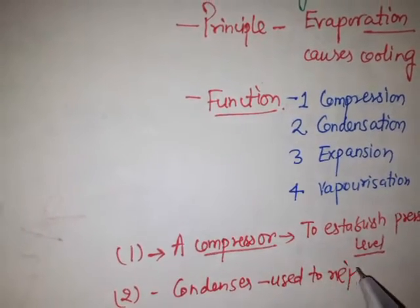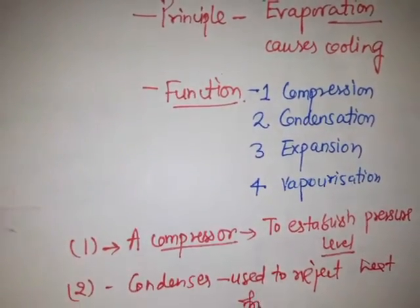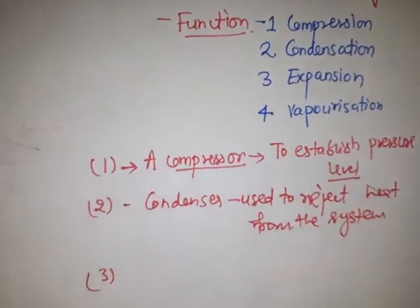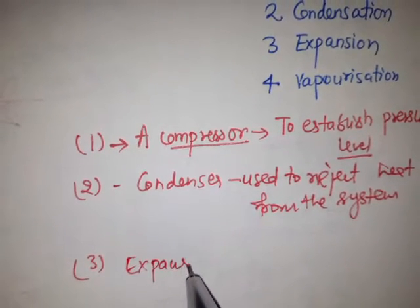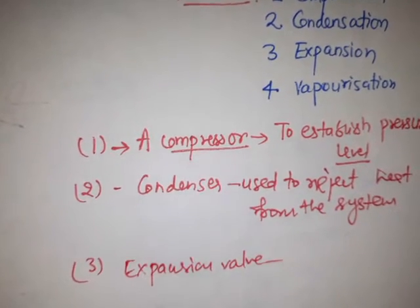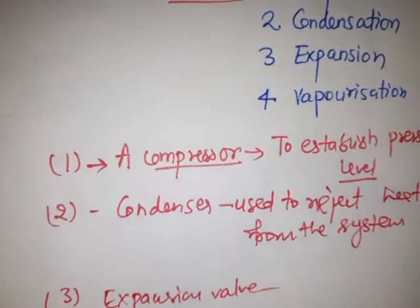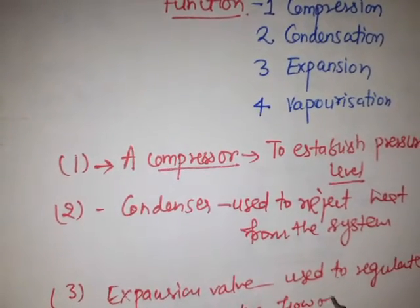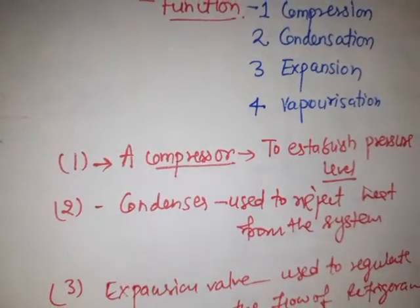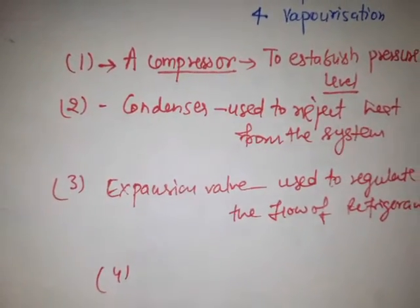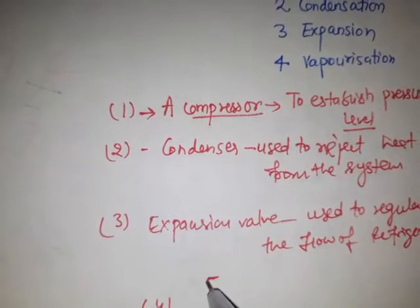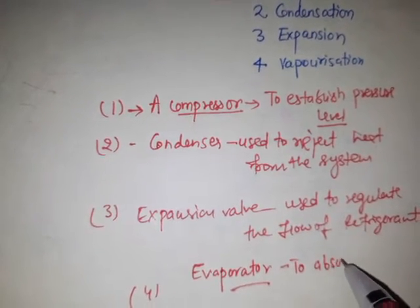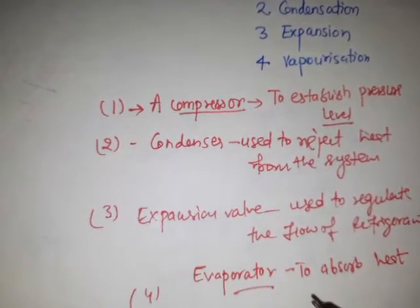The condenser is used to reject heat from the system. The third necessity is the expansion valve, which is used to regulate the flow of the refrigerant. The fourth necessity is the evaporator, which is basically used to absorb heat from the system.